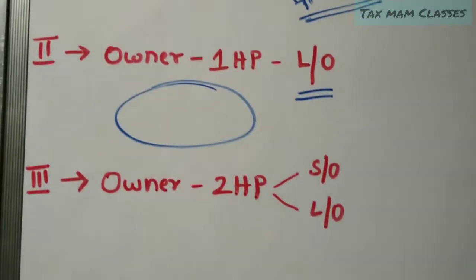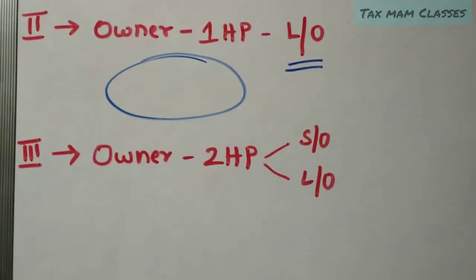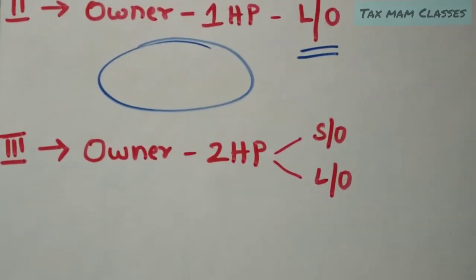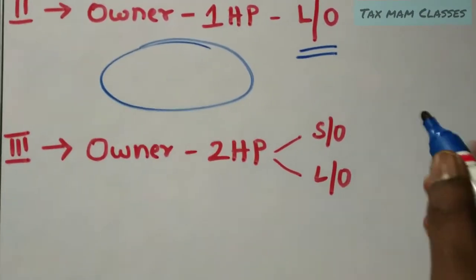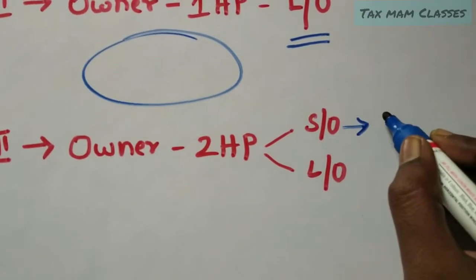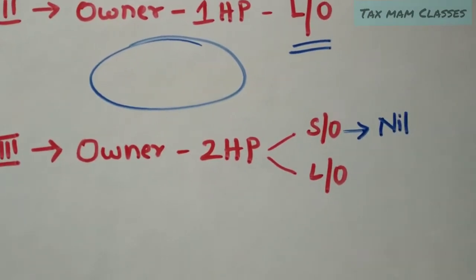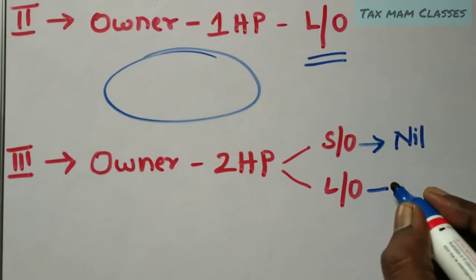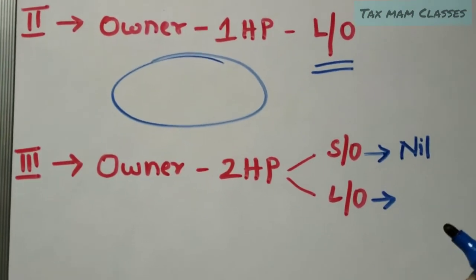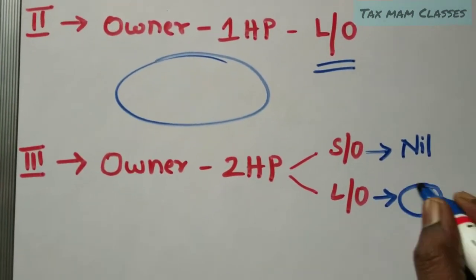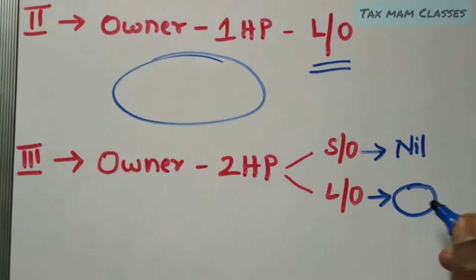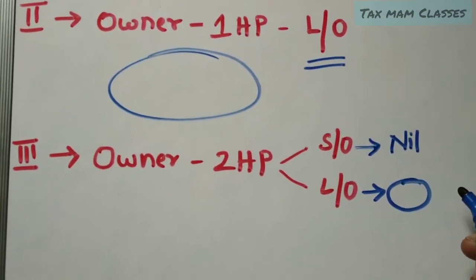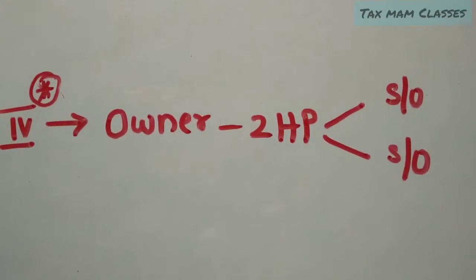In the third situation, the owner has two house properties — one is self-occupied and another is let out. For the self-occupied property, the GAV is nil. For the let-out property, we compute the gross annual value according to the provisions, and with that amount we proceed with the computation procedure.